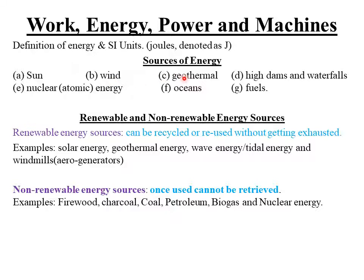The third source of energy is geothermal energy. When underground water is exposed to the immense heat inside the earth's crust, the water boils and turns into steam which rapidly flows out of the earth's surface under very high pressure and with a lot of kinetic energy. This kinetic energy is used to turn the turbines in a geothermal power station. These turbines rotate conductors within a magnetic field, hence generating electricity by the same process of electromagnetic induction.